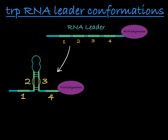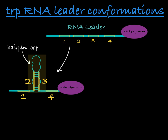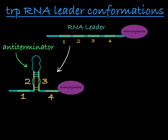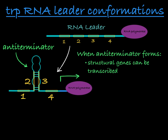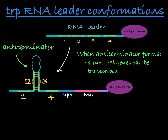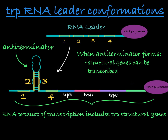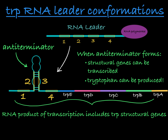Alternatively, when we see this formation where regions 2 and 3 are bound together, we see a single hairpin loop form. This hairpin loop is called an anti-terminator. It will not interfere with the transcription of the structural genes, resulting in a longer RNA sequence produced by RNA polymerase, including the structural gene sequence. So the trp structural genes can be expressed and tryptophan will be produced by the cell when the RNA leader creates this formation.